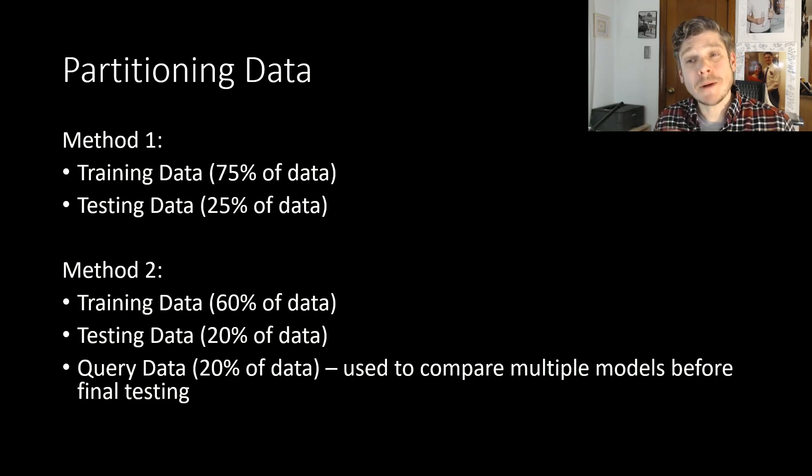So when we partition the data, there's really two different methods. Like I said, the most common way is just to have a training set of data and a testing set of data, which, again, you want to split it roughly 75-25, or you could go 80-20. But again, roughly around those ratios. So you want the majority of your data to be the training data so that you have a robust training data set, and then a smaller subset for your testing data to test later on.